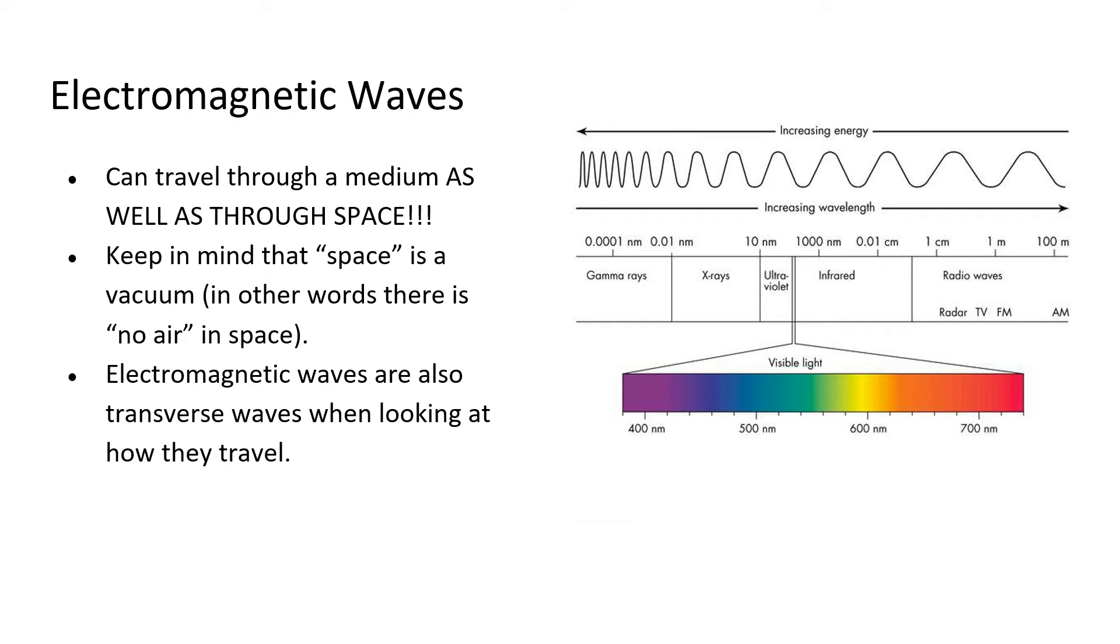Electromagnetic waves travel through space as its medium. You can tell, looking at the relationship between energy and wavelength, the shorter the wavelength, the higher amount of energy. The longer the wavelength, the lower amount of energy. You can see the relationship here.